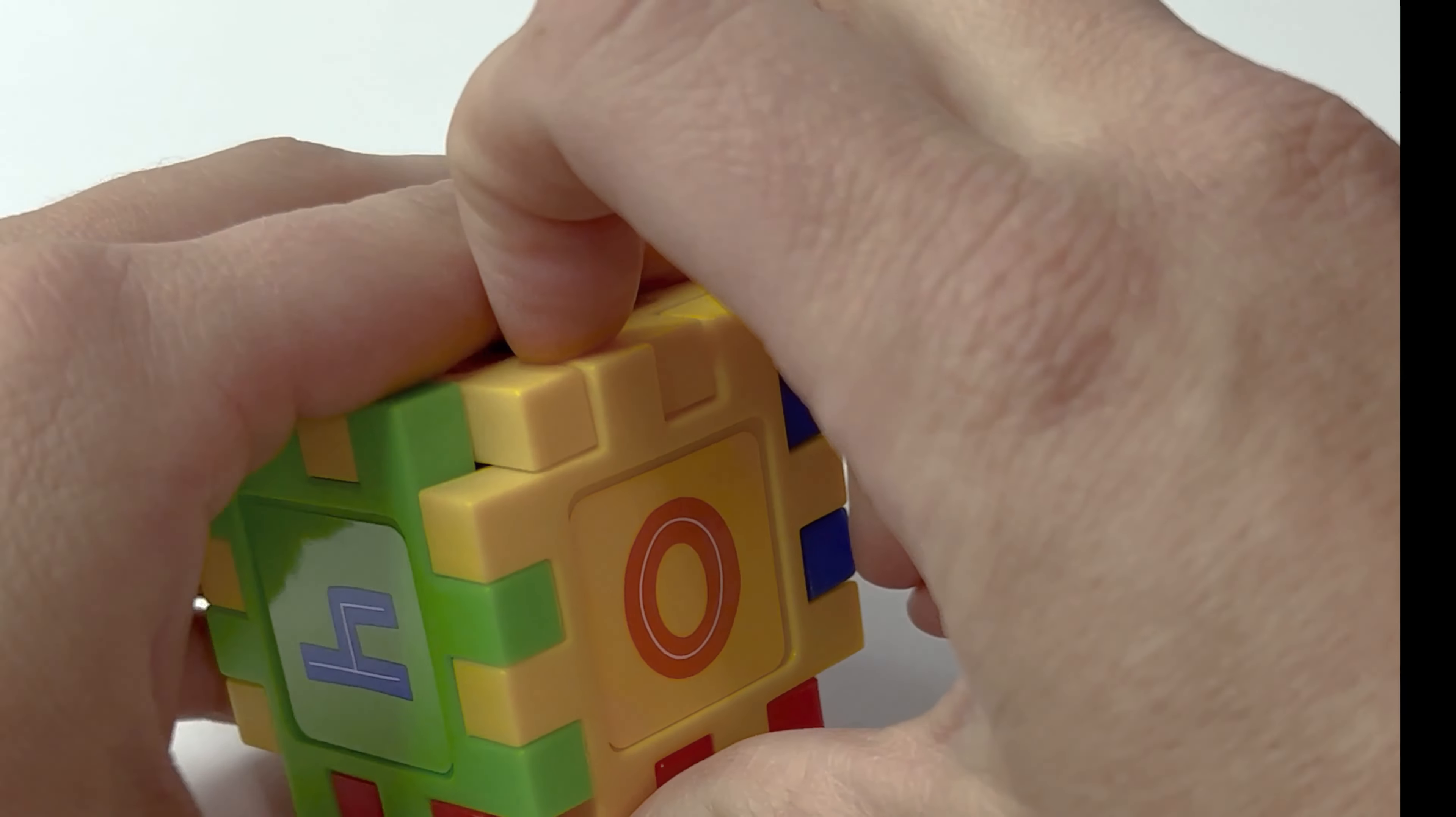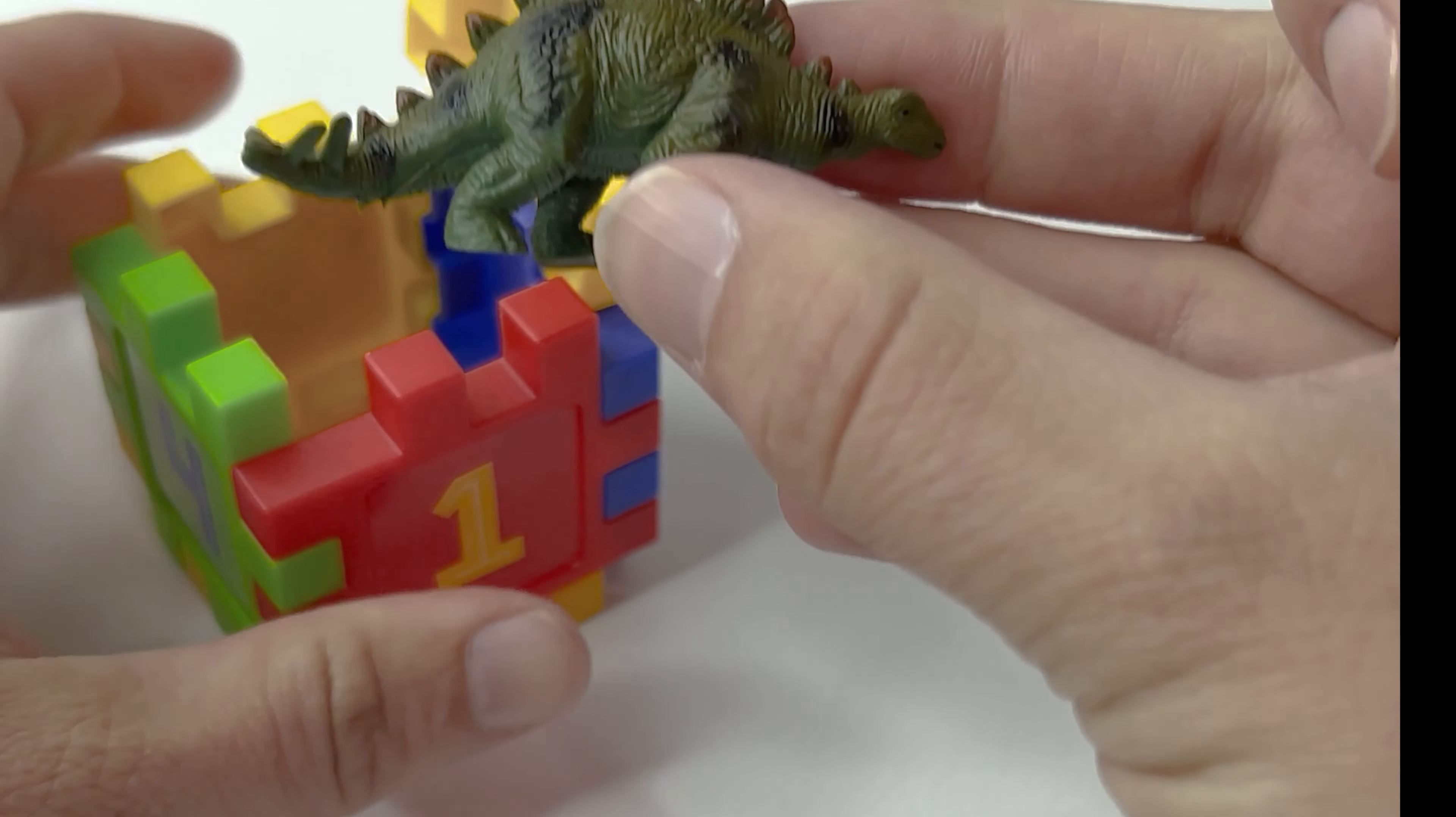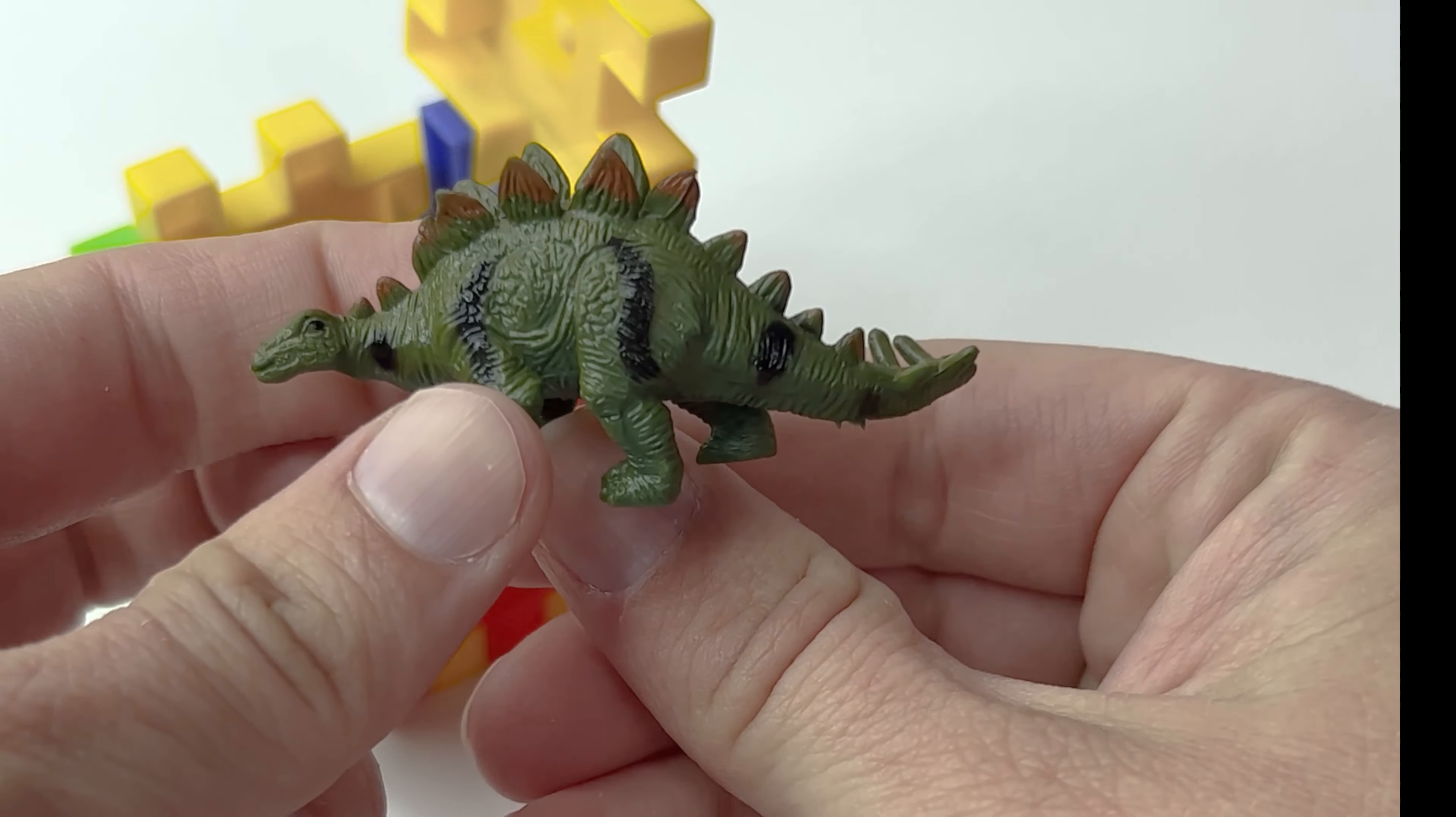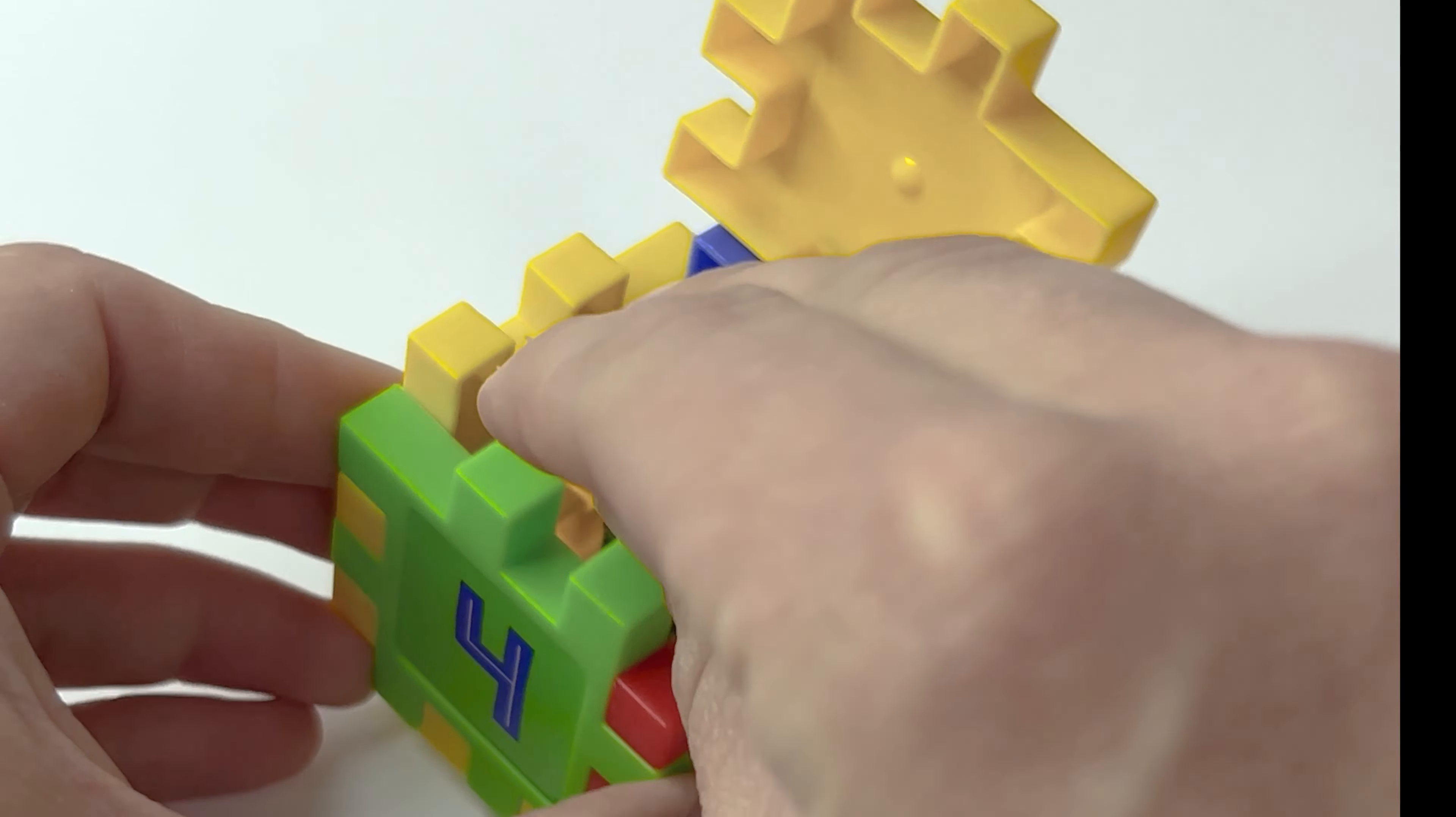I wonder what it could be. Whoa! There's a dinosaur in there. Do you know what kind of dinosaur that is? Look at how it's shaped. Look at its tail. It's a stegosaurus. That's right. That was hidden inside our number box. Pretty cool.